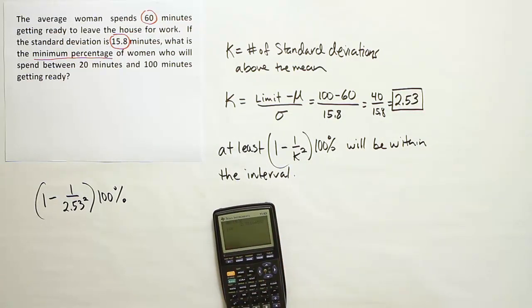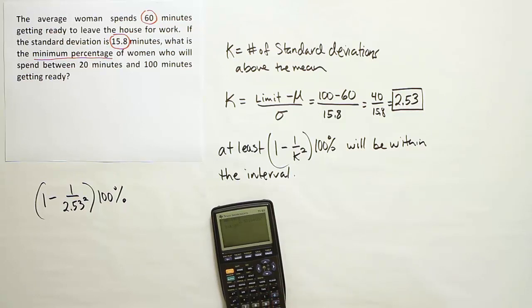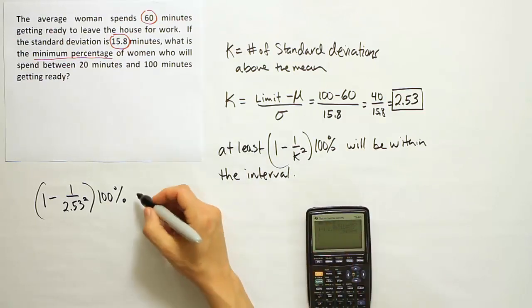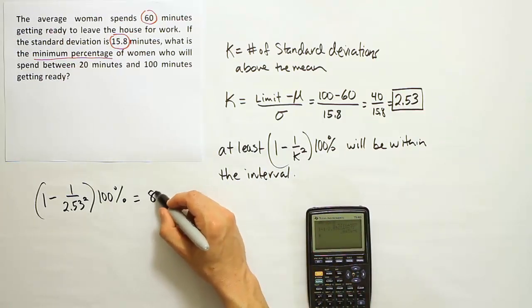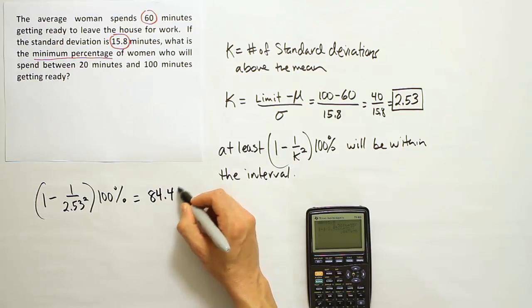1 minus 1 divided by 2.53. I'm going to add a couple more digits here. The full number was 2.53164557. I'll square that and end up with the following answer: 84.4%.